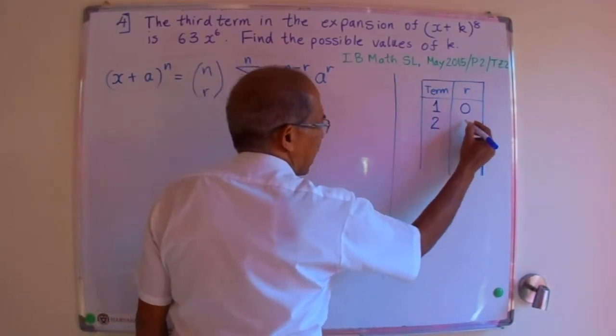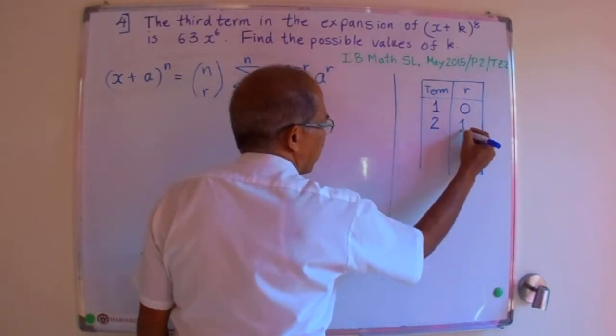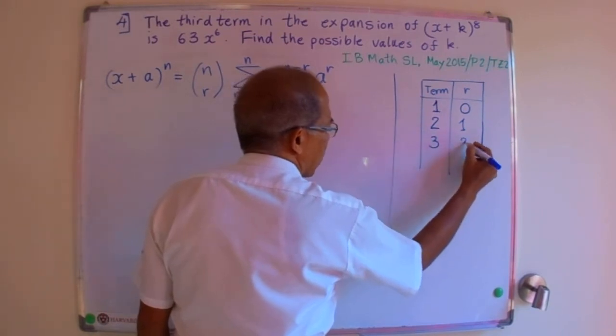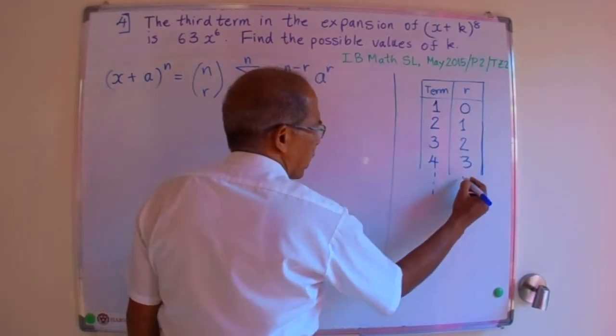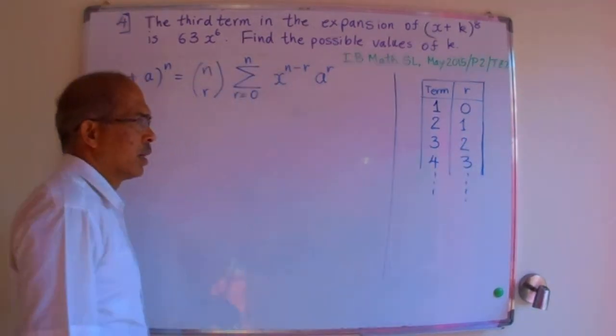In that case, the second term will have a value of r as 1, the third term will have a value of r as 2, the fourth term will have a value of r as 3, and so on for the term and for r.